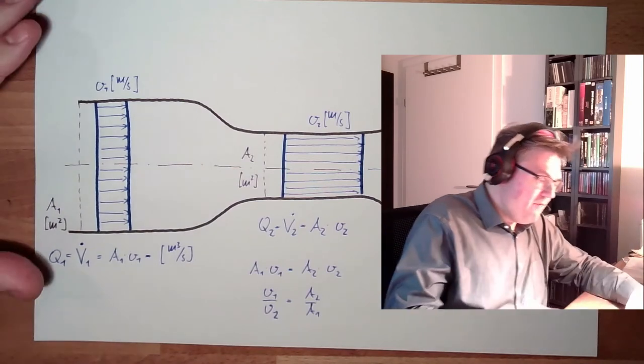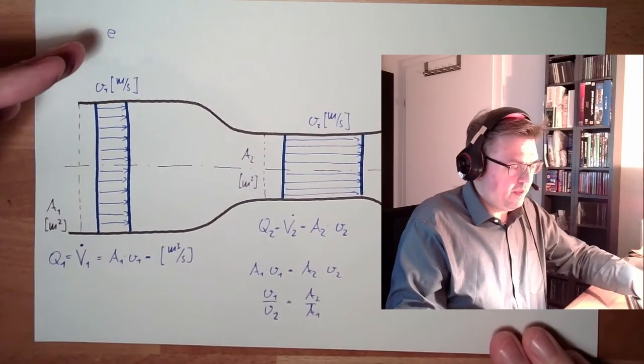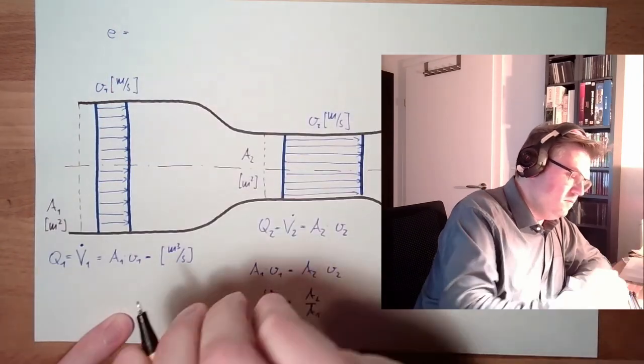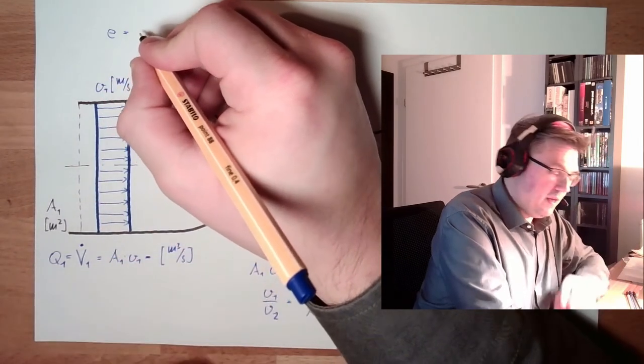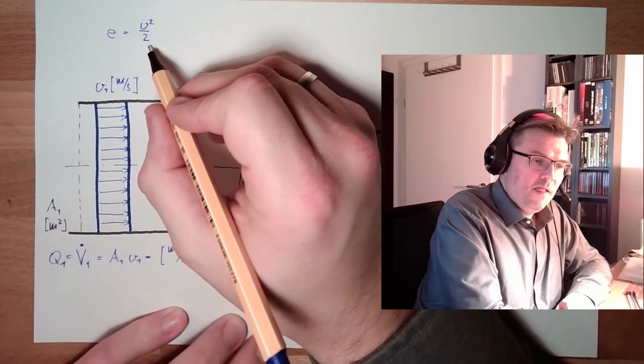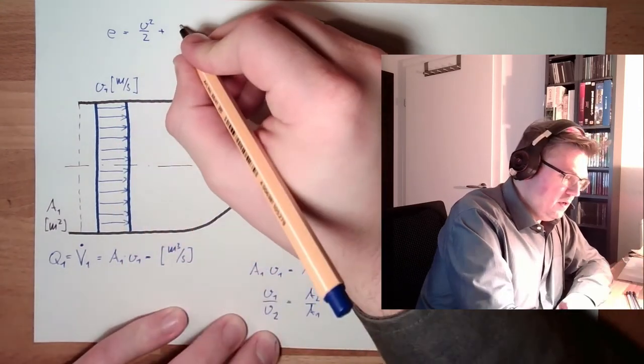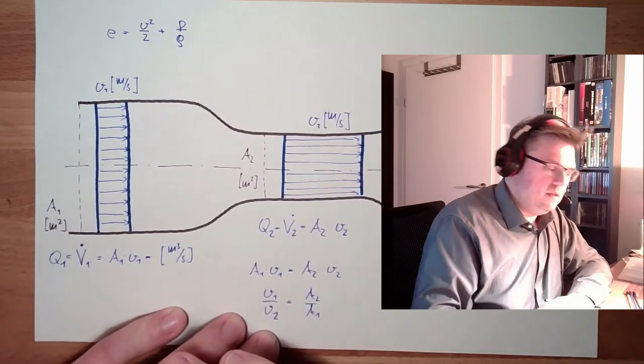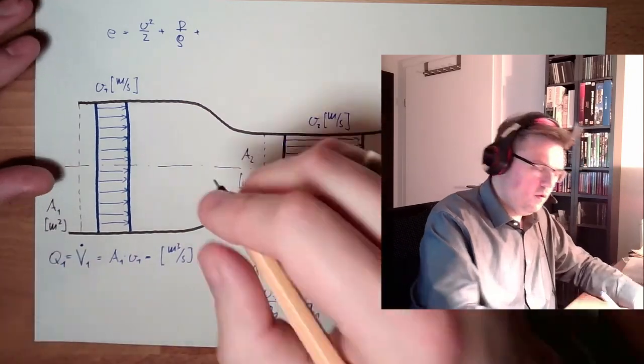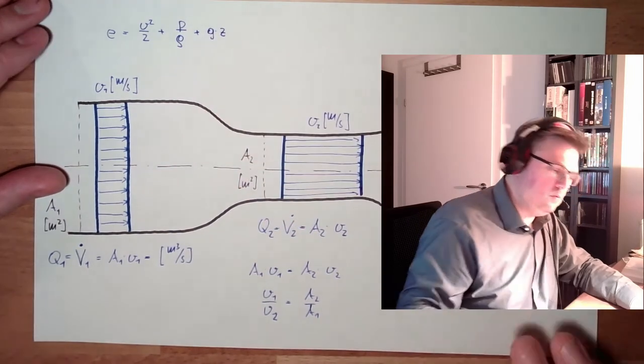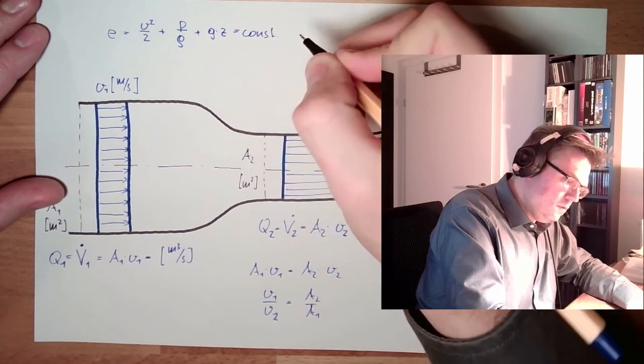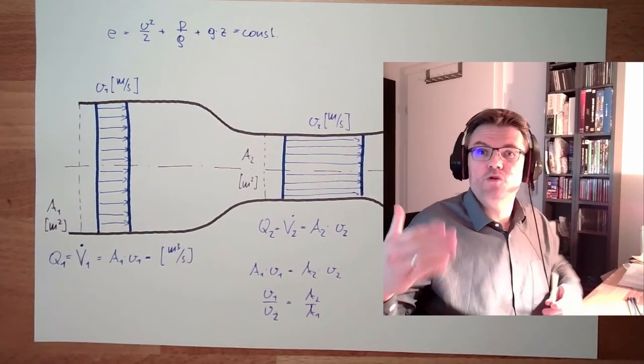So every energy, specific energy, energy by kilograms, equals the velocity energy, so the kinematic energy. This means V squared half by kilo, plus the potential energy, P divided by the density, and plus the height energy. It's also a potential part but it's from the sea level. So G multiplied by the sea level. This must remain constant because I cannot produce or destroy energy.